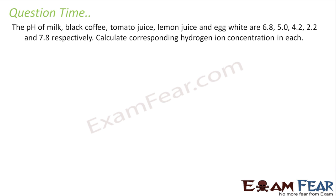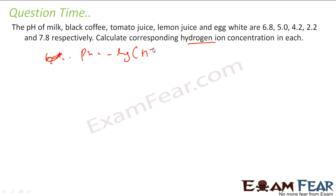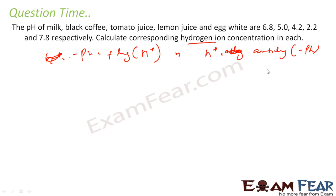A very similar question: the pH values of milk, black coffee, tomato juice, lemon juice, and egg white are given, and we need to find the corresponding hydrogen ion concentration in each. Since pH = −log[H⁺], rearranging gives [H⁺] = antilog(−pH). So we take the antilog of the negative pH value for each case.